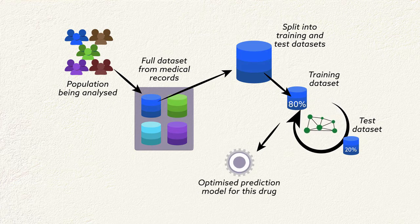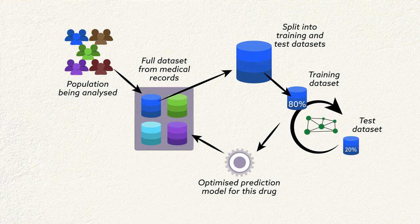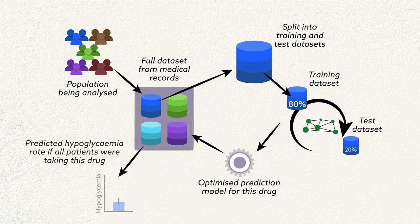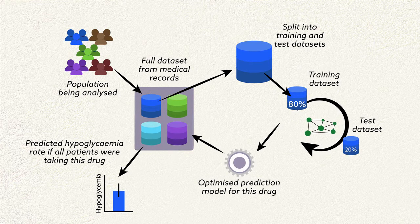At that point, the optimized model is applied to the full dataset, irrespective of what treatment the patients were using, to give a prediction of what hypoglycemia rates would be if all patients were using the basal insulin being modeled.